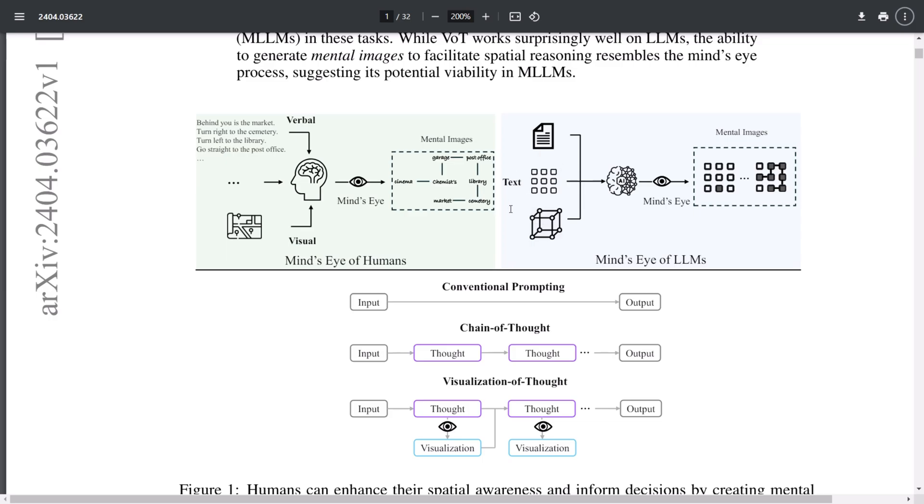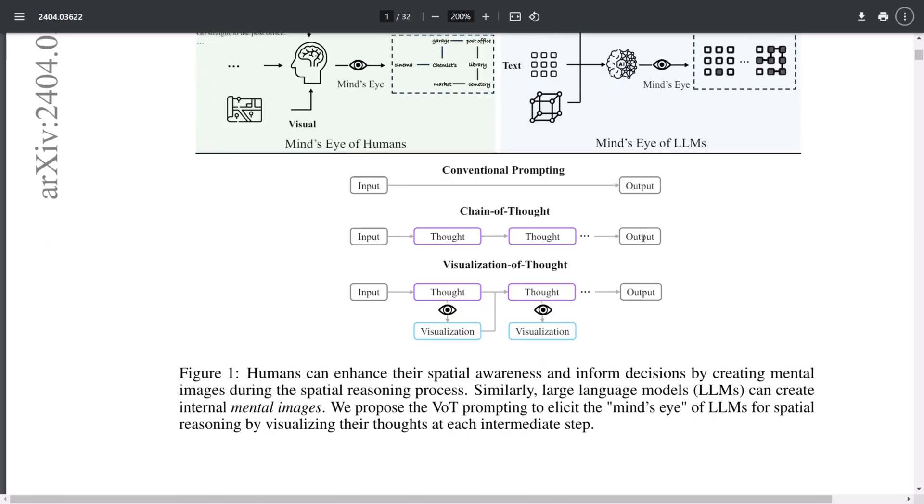Now, on the right side, we're exploring the concept of the mind's eye in large language models. Essentially, these models operate solely on text-based input, but when combined, they form what might be considered the mind's eye of large language models. From there, they generate what we might call a mental image. So the question is whether we can truly achieve this mental imagery with a large language model. In conventional prompting, you provide an input and receive an output. However, with more advanced techniques like chain of thought, the process involves a detailed walkthrough of each thought leading to the output. Next, we have the visualization of thought. This involves taking an input, asking the model to think, and then visually representing each step of the thought process before arriving at the final output.